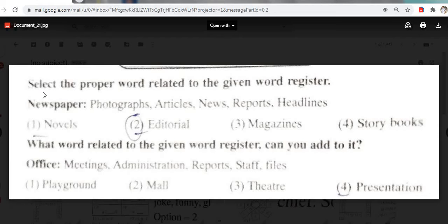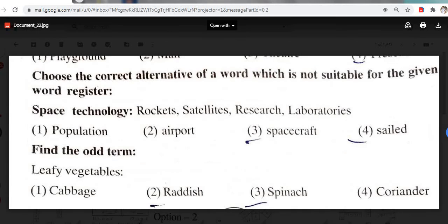Select the proper word related to the given register. Newspaper: photographs, articles, news, reports, headlines. Editorial means who edit news. Related to the given word register. Office: meetings, administrations, reports, staff, files. Option four. Presentation. Option four is the only answer because theater, mall, and playground can't come.